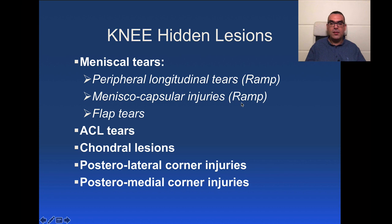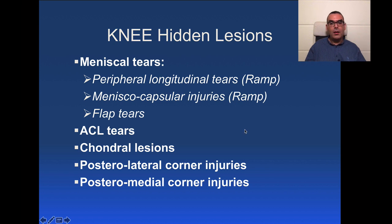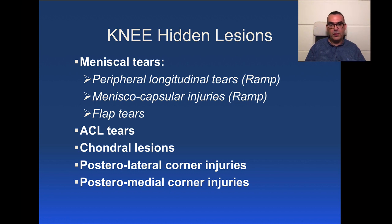Ramp lesions are very commonly associated with ACL tears. When you see an anterior cruciate ligament tear, one of the things you must search for is a ramp lesion. ACL tears can be quite difficult to assess on MRI, and especially partial or small tears may be missed if not probed correctly. You have to be very meticulous when commenting on the ACL.